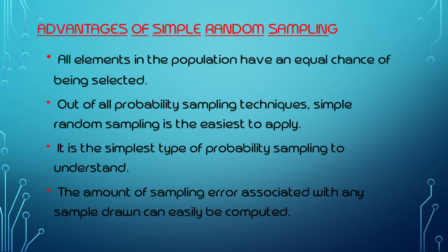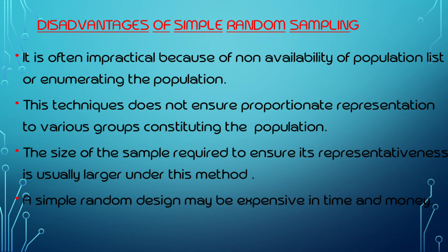If there is any sampling error, we can calculate and identify the advantages of the sample drawn. The disadvantage is that it is often impractical because of non-availability of a population list, or difficulty enumerating the population — that is, when the population is larger than the sample.